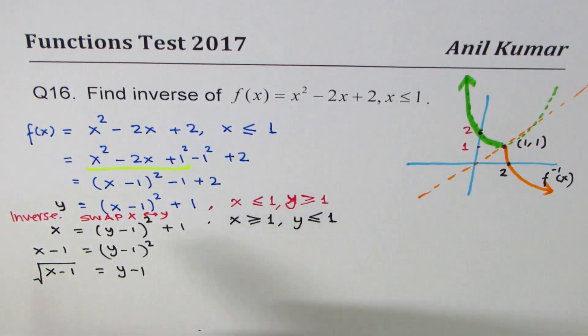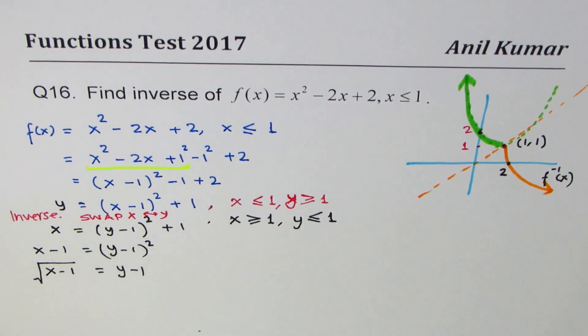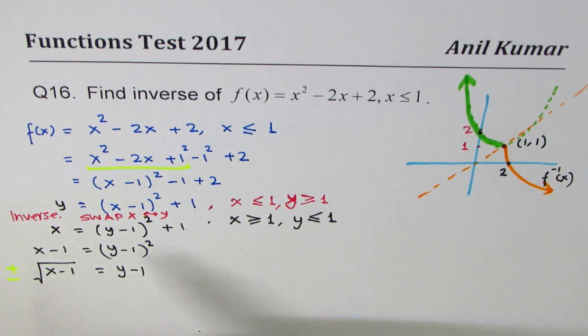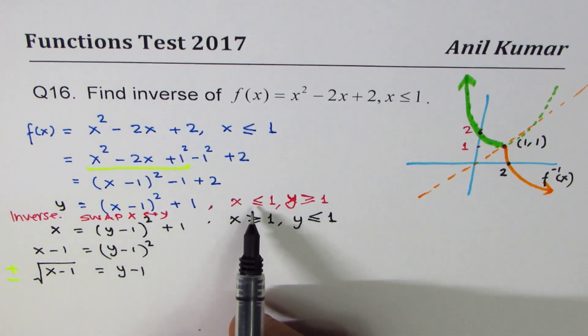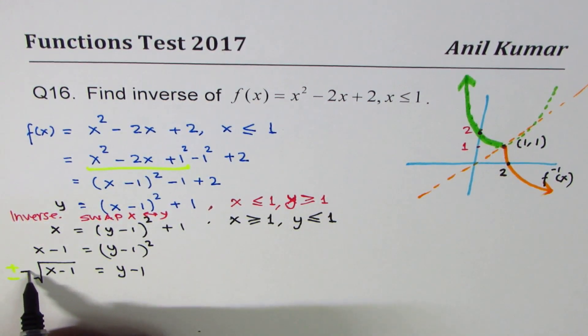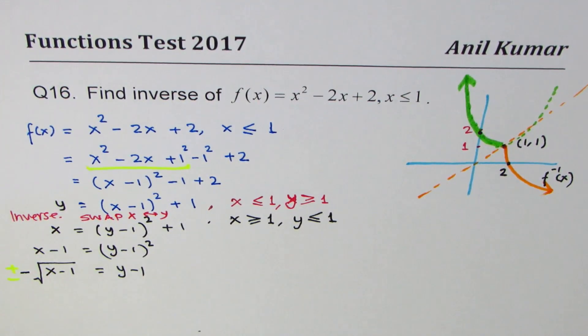Since x ≤ 1, whenever we do square root we actually write both positive and negative. However, since we are considering the domain of x ≤ 1, we are looking only for the negative half, not the positive half. We will write negative here, and that is very critical to understand.